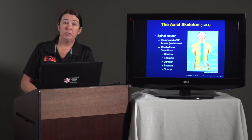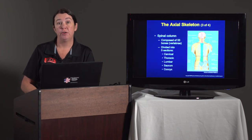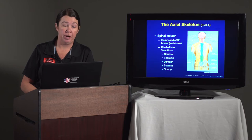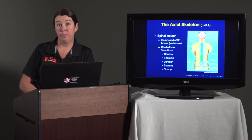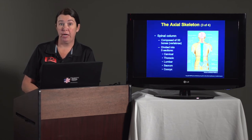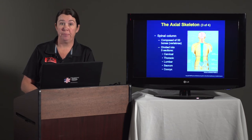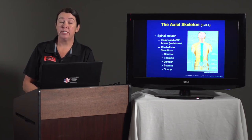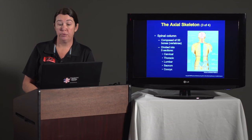The spinal column is composed of 33 vertebrae stacked on top of each other with intervertebral discs cushioning in between each vertebra. The names and numbers are important to know. We start at the top with the cervical spine that has seven vertebrae, going down to the thoracic which has 12 vertebrae. The lumbar has five vertebrae, the sacrum also has five vertebrae, and the coccyx, or tailbone, has four fused vertebrae.